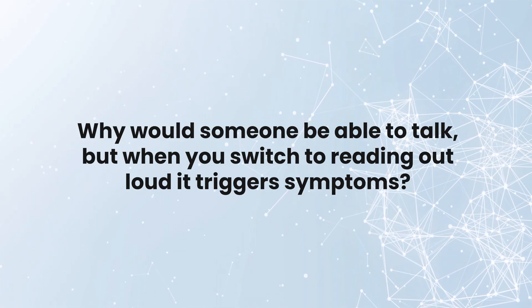Why would someone be able to talk, but switching from talking to reading out loud triggers symptoms? When you just speak, the cadence doesn't change. When you start reading, you're now using your eyes to focus on targets, moving them accurately, processing what you're seeing, and converting that into words. If you can process and speak fine on their own, but adding the reading part messes you up, there might be a component with eye movement or visual processing that's problematic.